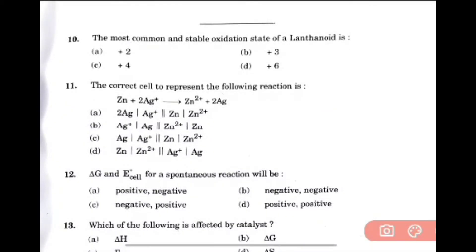The most common and stable oxidation state of lanthanoid is option B. The correct cell to represent in the following reaction is option D. Now delta G and E cell for a spontaneous reaction, so delta G should be negative, E cell will be positive. Option C will be the right answer.